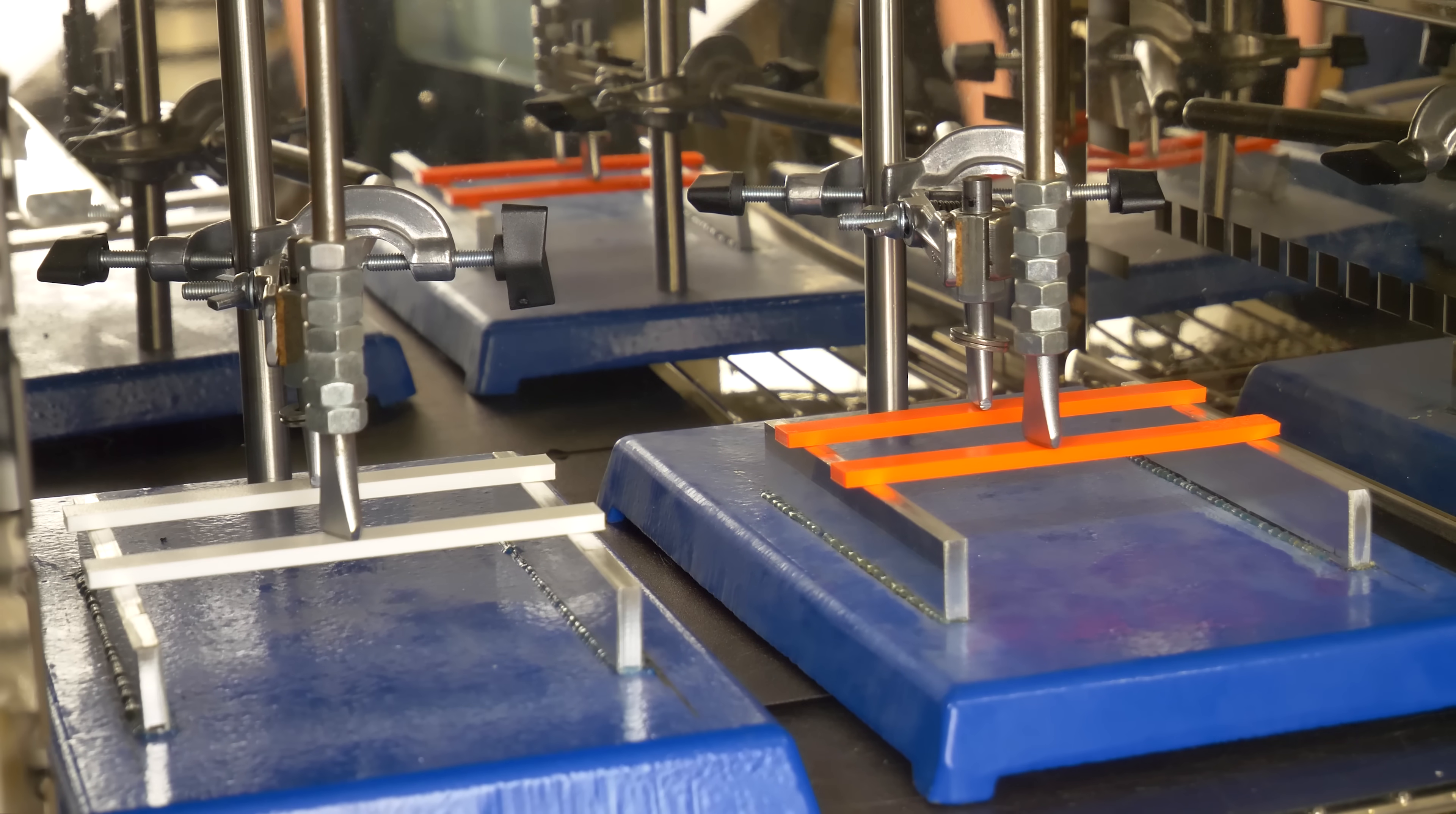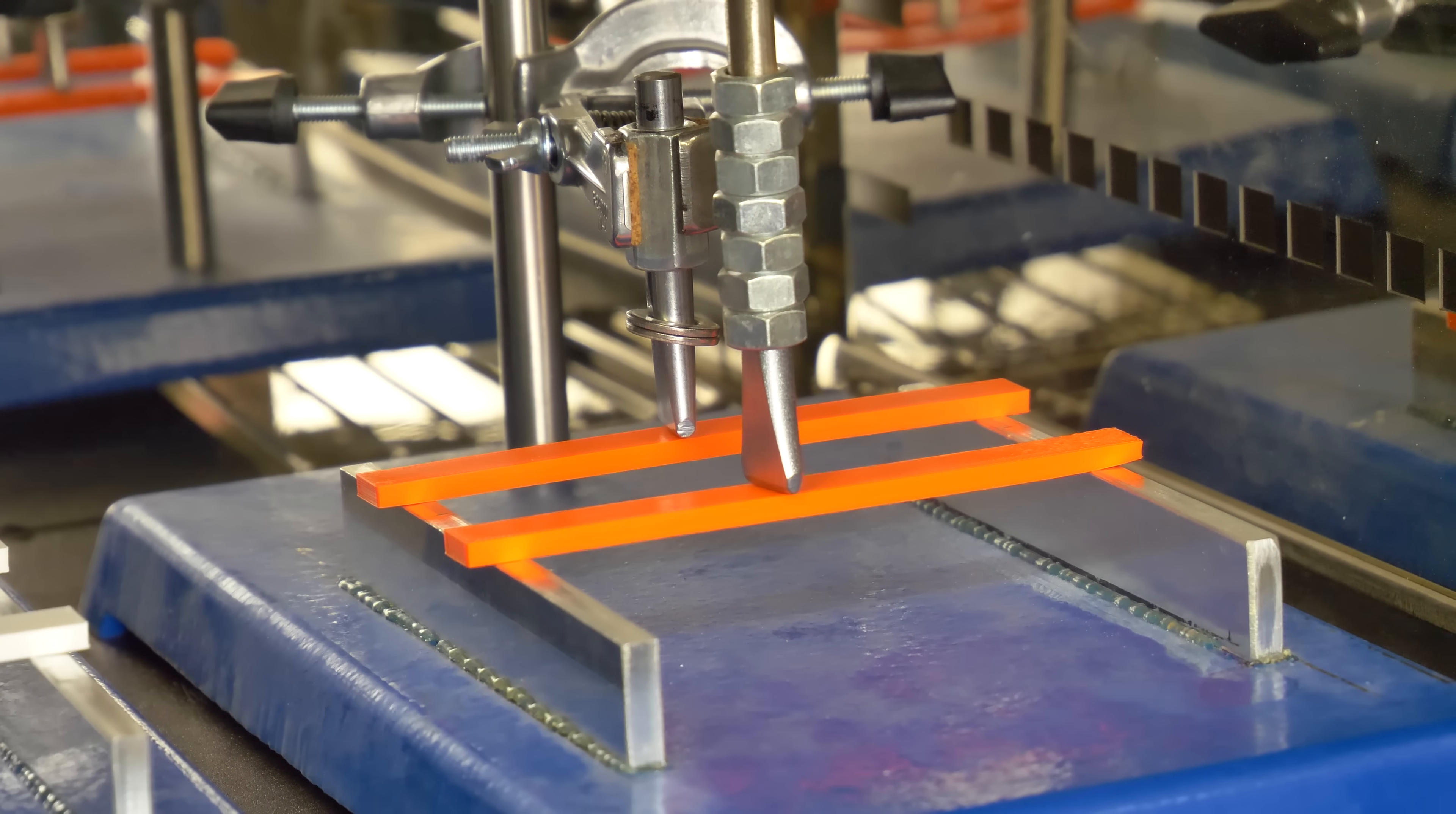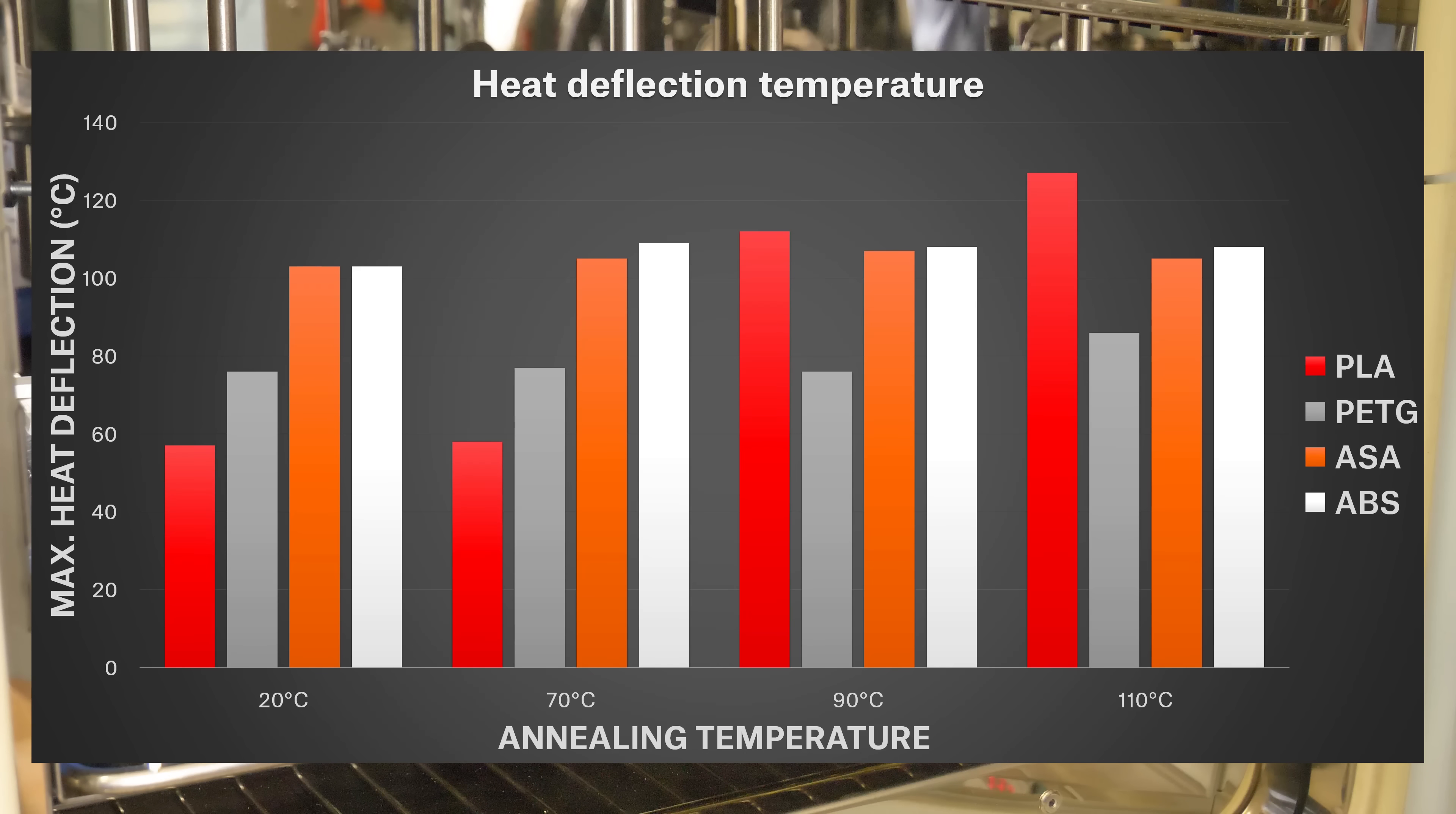Last but not least, we checked whether annealing improved the temperature resistance. We applied weight onto the printed objects and started increasing temperature until they bent. Surprisingly, PLA won this test as well. 3D objects printed with PLA and annealed at 90 degrees Celsius were able to withstand temperatures over 100 degrees Celsius. This is a very good result, especially when considering the fact that PLA usually starts softening at around 60 degrees Celsius.